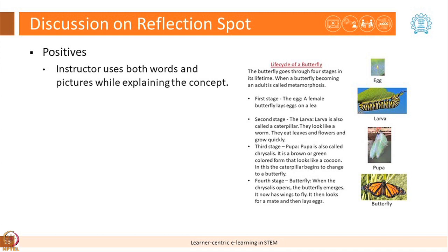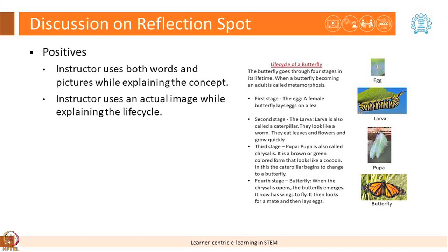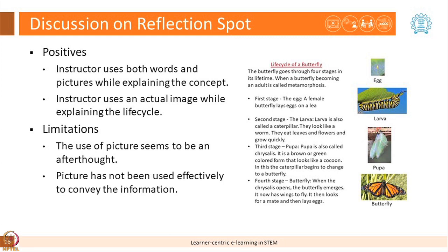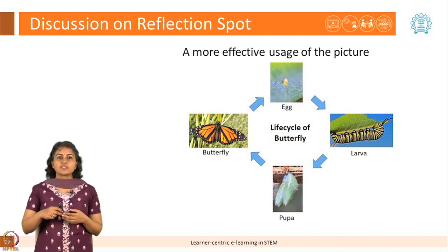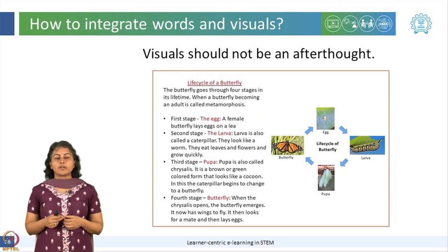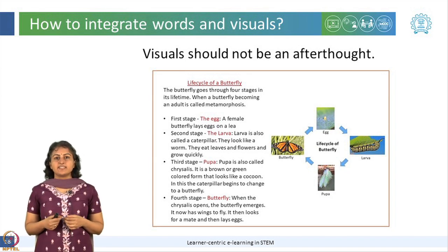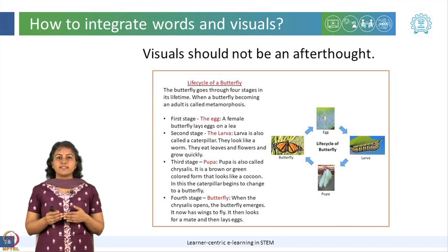You might also have observed that she used actual images of the butterfly in its different forms. However, there is definitely scope for improvement. It seems as if the teacher used the images as an afterthought, and the graphics have not been used effectively to convey the information. A more effective usage would have been to use the graphics to indicate the life cycle progression of the butterfly within the image itself. Visuals must not be an afterthought; they must supplement the e-learning content to maximize learning. As we can see in the image, the visuals emphasize the temporal aspect of the life cycle of the butterfly, and the text addresses this in greater detail, making the word-text combination more effective.